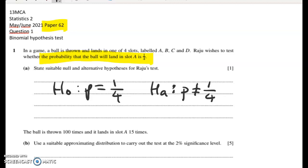So it's a two-tailed test, and we just have to be a little bit more careful with those when we go on to actually do the hypothesis test. And then we need to say that P is equal to the probability that ball lands in slot A, or something like that.